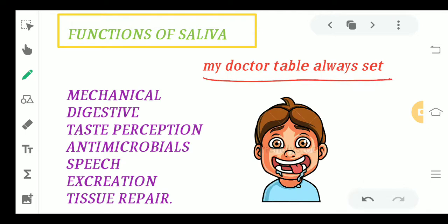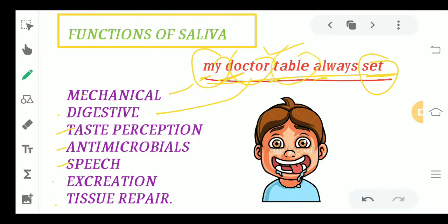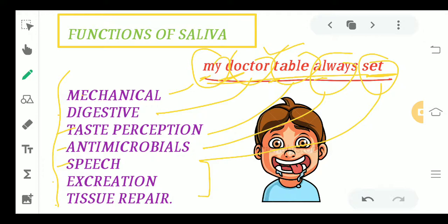To learn the functions of saliva, here is a mnemonic: 'My Doctor Table Always Set.' From this, you take the letters M, D, T, A, S, E, T. From 'My' you get Mechanical; from 'Doctor' — Digestive; from 'Table' — Taste perception; from 'Always' — Antimicrobial; and from 'Set' — Speech, Excretion, and Tissue repair.